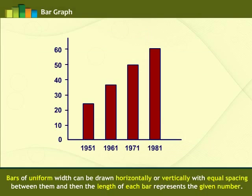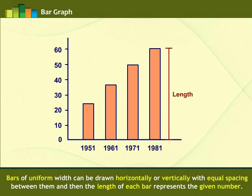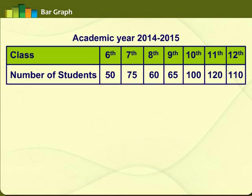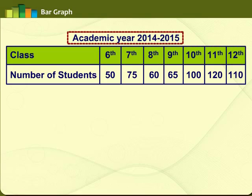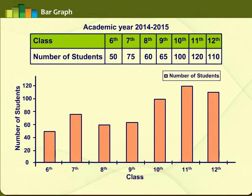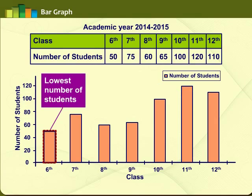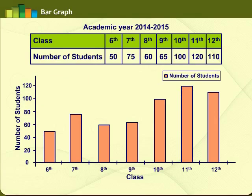Bars of uniform width can be drawn horizontally or vertically with equal spacing between them, and the length of each bar represents the given number. Such a method of representing data is called a bar diagram or bar graph. For example, a principal asked a teacher to present the number of students for classes 6 to 12 for the academic year 2014-2015. The teacher made a bar graph, and from it the principal could see that class 11 had the highest number of students while class 6 had the lowest — just by looking at the graph.